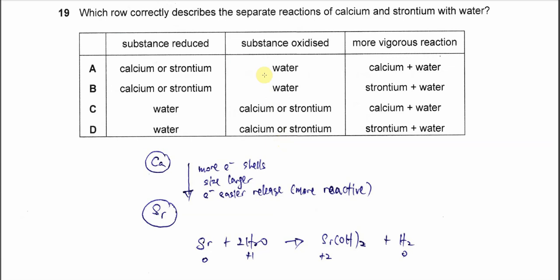First, we need to know the difference between calcium and strontium. Calcium and strontium are in the same group, but strontium is in a lower period than calcium, which means strontium has more electron shells and is larger in size. When size is larger, electrons are easier to release from the metals because of more shielding effects. So we know that strontium is easier to release electrons, so it's more reactive.